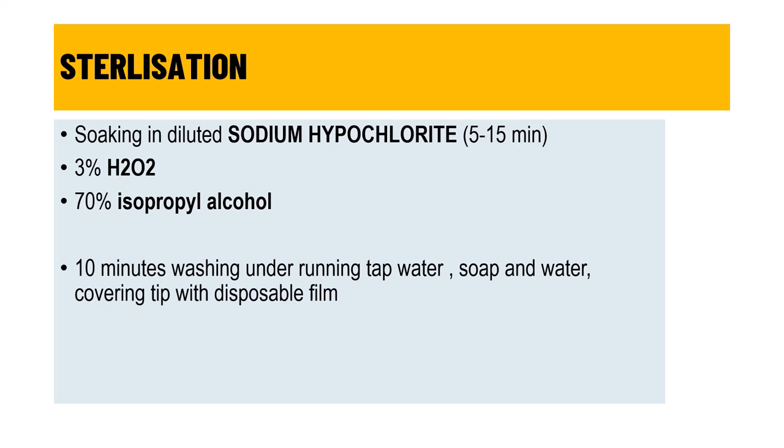Disadvantages include dependence on corneal thickness causing over- or underestimation, altered readings in patients who have undergone refractive surgery, higher cost than the Schiotz tonometer, lack of portability, and the need for sterilization between patients. Sterilization can be done by soaking in diluted sodium hypochlorite for 5–15 minutes, 3% hydrogen peroxide, 70% isopropyl alcohol, 10 minutes under running tap water with soap, or using disposable tonometer tips. However, disposable films do not provide adequate protection against prion disease.